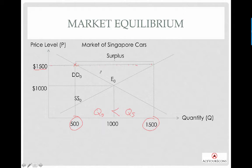So, in the video, we actually learned that when there is a surplus scenario, there will be a downward pressure on price. Why is it a downward pressure on price?